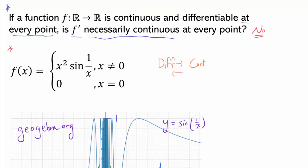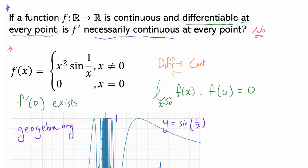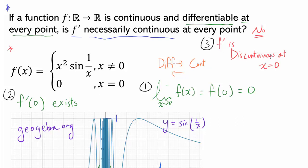Now we consider a slightly different function: f(x) = x²·sin(1/x) when x ≠ 0, and f(0) = 0 to avoid dividing by zero. I assert that this function is continuous and differentiable at every single point, even x = 0. So the limit as x approaches 0 of f(x) exists and equals f(0) = 0, and f'(0) exists. But here's the punchline: I assert that f' is discontinuous — not continuous at x = 0. There are three things to prove: first, f is continuous; second, f is differentiable; and third, f' is discontinuous at 0.